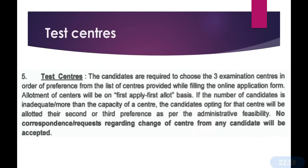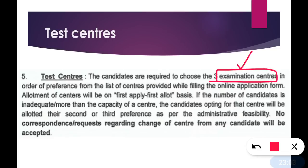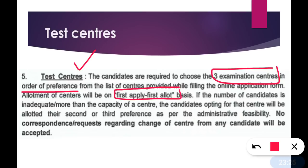Regarding test centers: you can choose three examination centers in order of preference. First preference, second preference, and third — if your first choice is not available. Test centers are allotted on a first-apply, first-allot basis. So if you apply late, you may not get your preferred center. No requests for change of test center from candidates will be entertained.